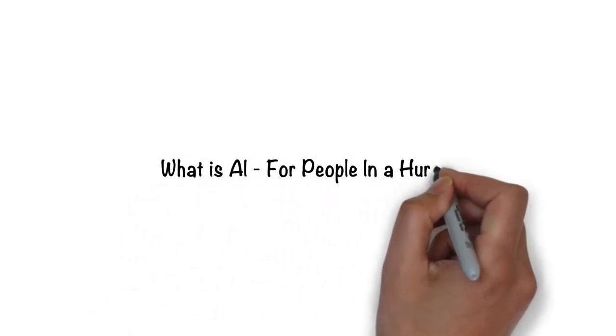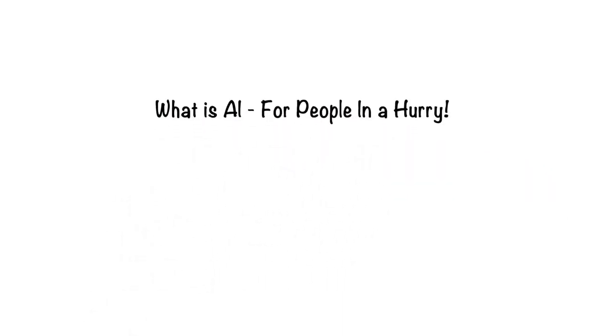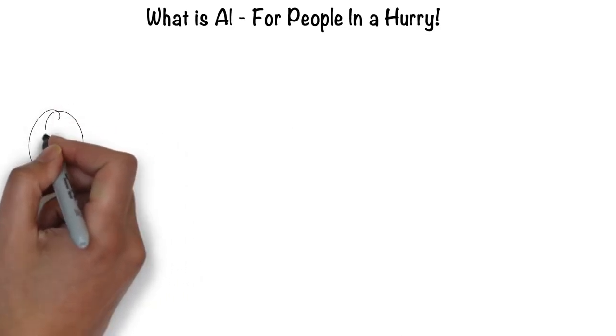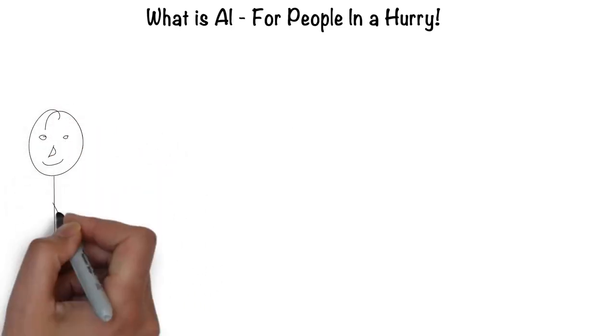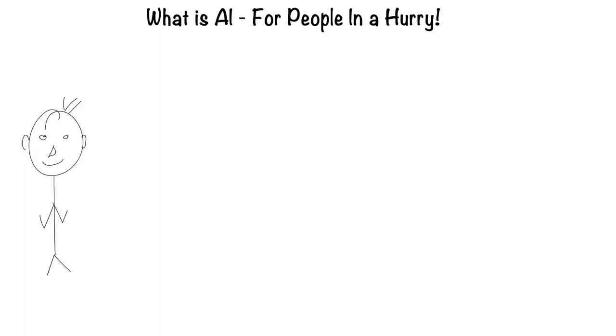Artificial intelligence for people in a hurry. The easiest way to think about artificial intelligence is in the context of a human. After all, humans are the most intelligent creatures we know of.